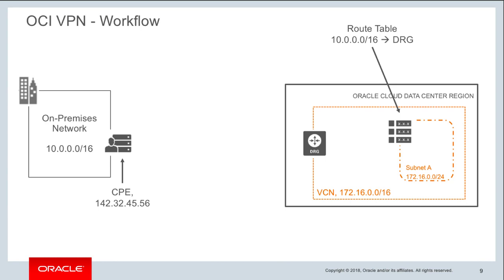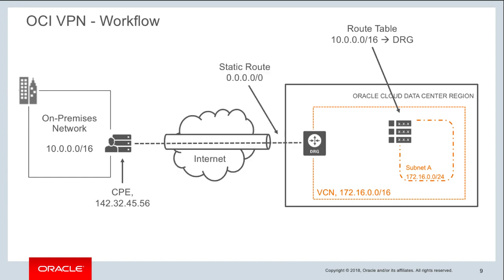Next, create a virtual CPE object in OCI by providing a name and the public IP of your actual router. Once the CPE device is created, create an IPSec connection between the DRG and the CPE device. When creating the IPSec connection, you also need to specify a static route — specifying a 0/0 route is recommended so that if you later change or expand your on-premises network, you won't need to modify the IPSec VPN connection itself. You can always add additional routes in your subnet route table.